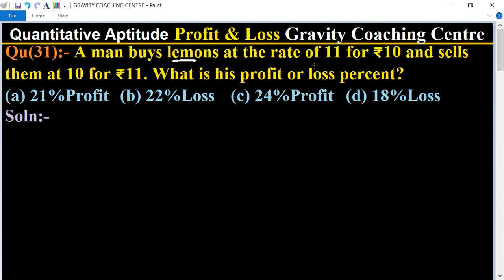The cost price of 11 lemons is rupees 10 and the selling price of 10 lemons is rupees 11. So what is his profit or loss percent? In this question, quantity and amount in rupees: the cost price of 11 lemons is rupees 10 and the selling price of 10 lemons is rupees 11.